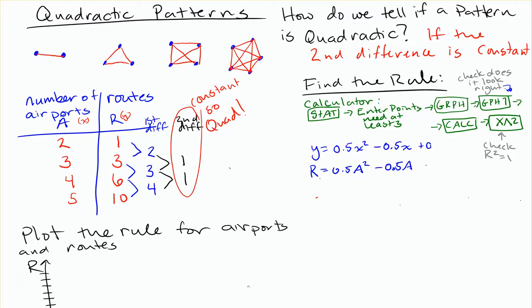With quadratic patterns, we've just investigated that and we found our rule. So 0.5a squared minus 0.5a is equal to the number of routes that you have between different numbers of airports.